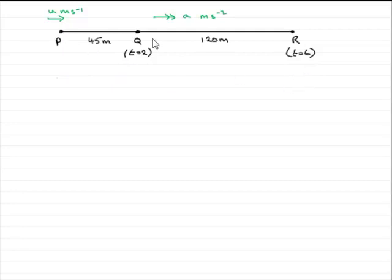We've got the horizontal straight road and we've got the posts P, Q and R marked on at distances PQ 45 metres and QR is 120 metres. And what I've done is I've put in the time that the car passes Q at 2 seconds and at R,